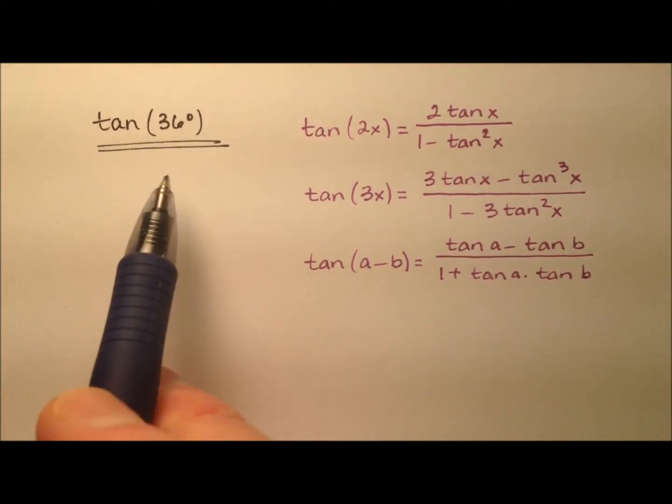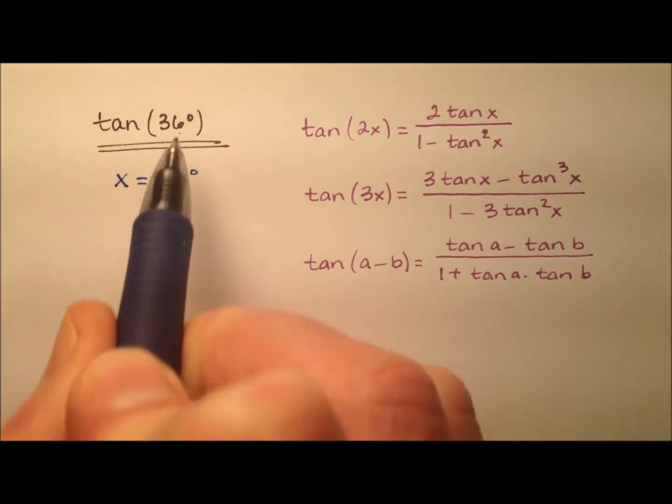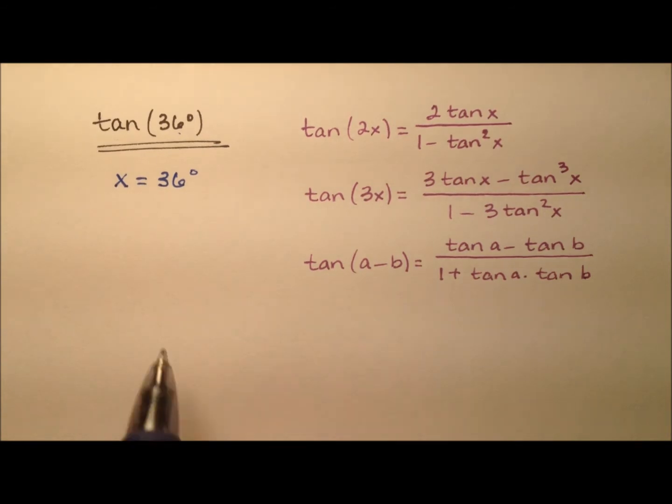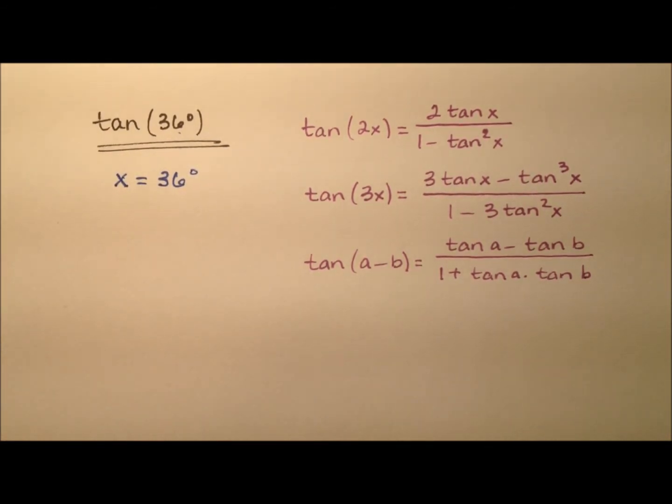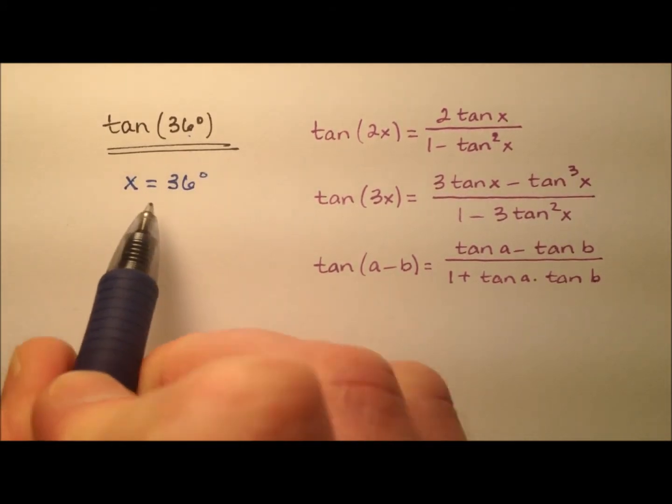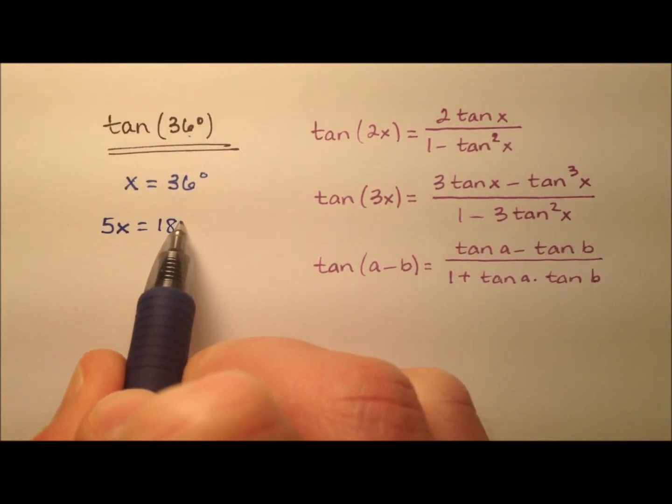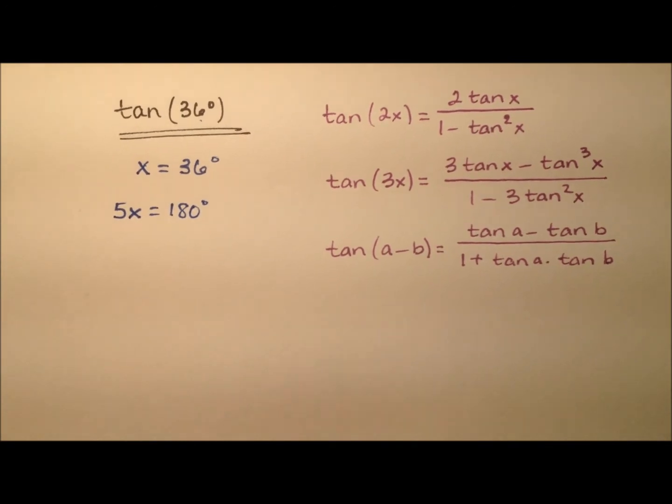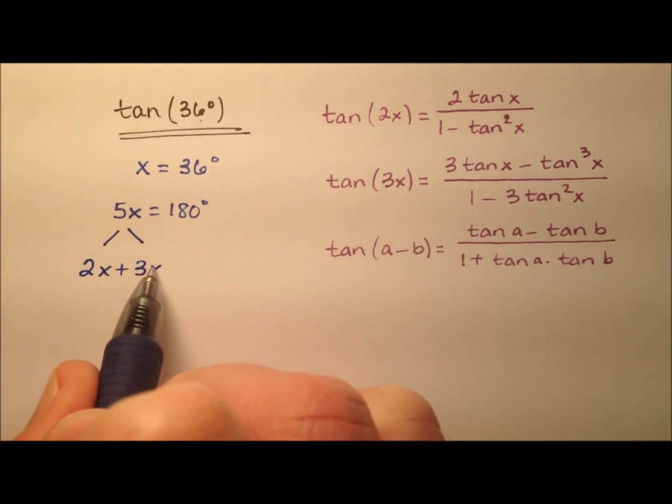Alright, so let's get started. I'm going to start by saying x equals this 36 degrees that we would like to find the tangent for. And since I now have this equation, I can do some properties of equality and some manipulations here. I'm going to start by multiplying both sides of the equation by 5. And when I do that, I'll have 5x equals 180. And so I'm going to take this 5x and break them up into a 2x plus a 3x to make that 180 degrees.